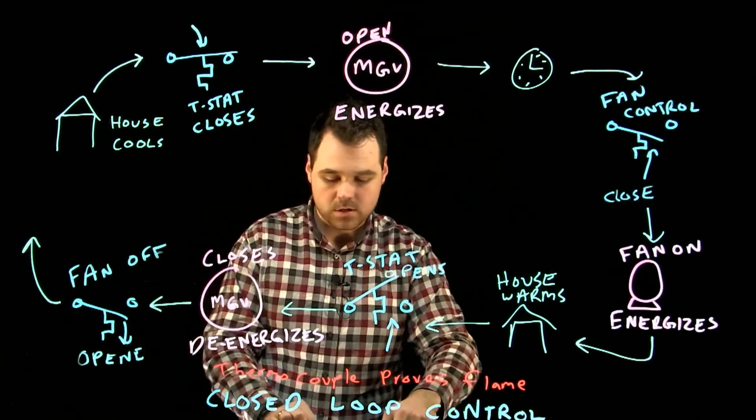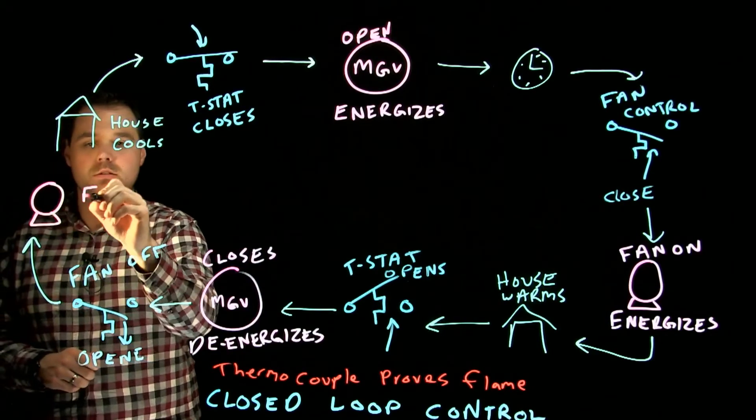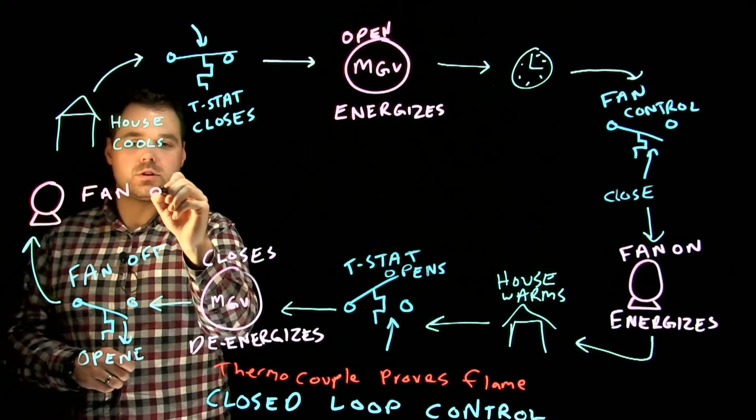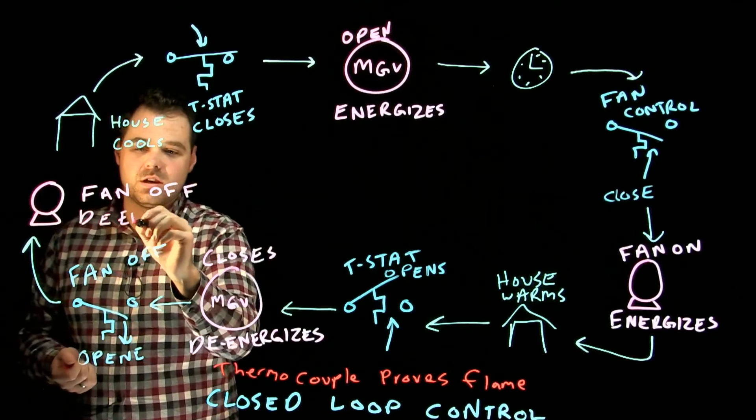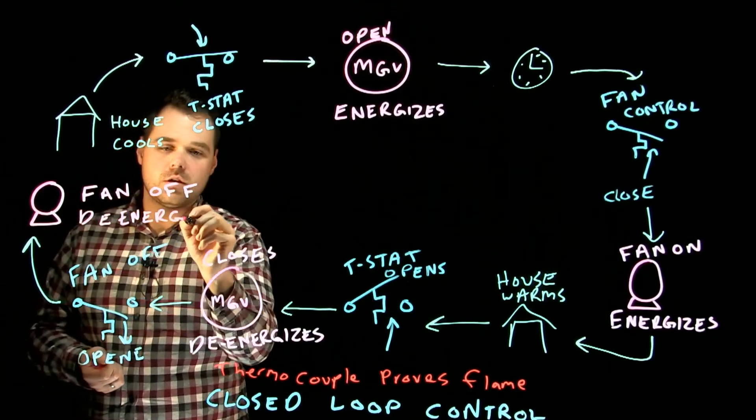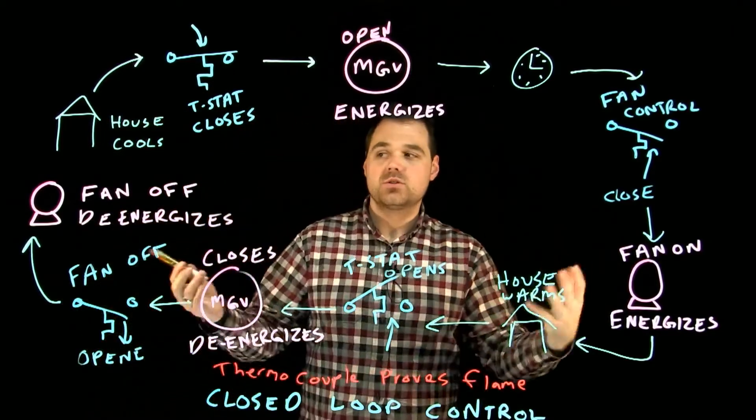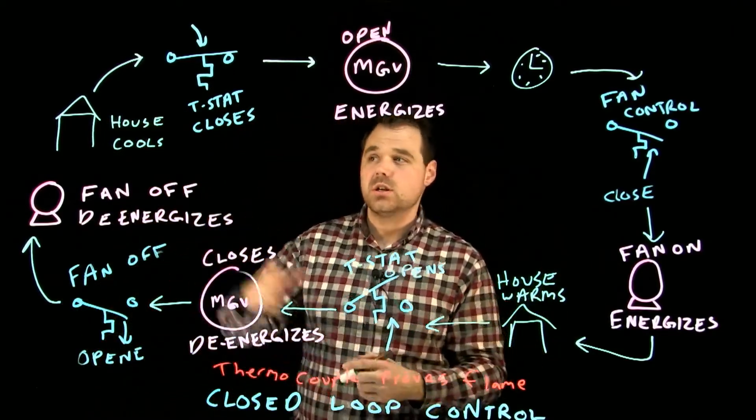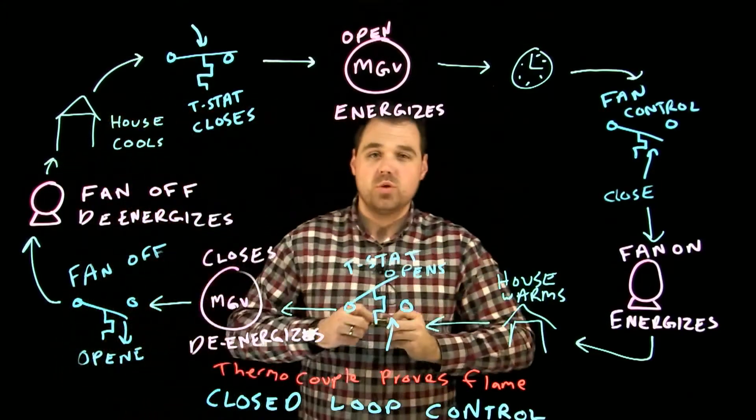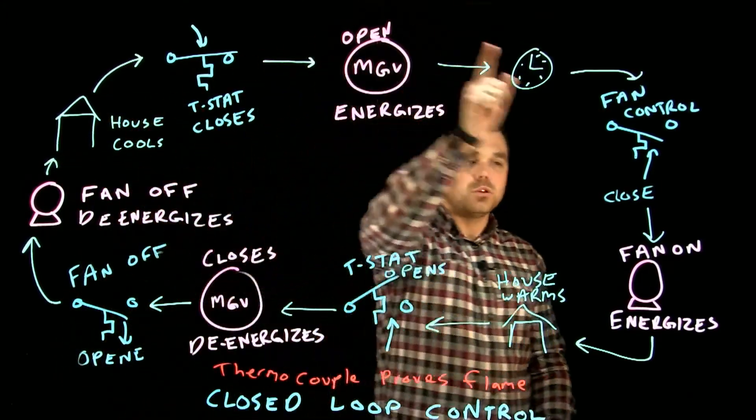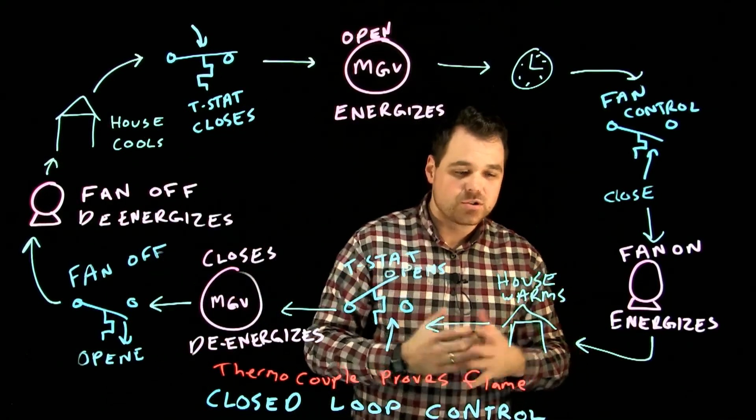Once that switch opens, we see the final step, which is the fan in the system turns off, or you could say the fan de-energizes. As soon as the fan turns off and de-energizes, again we see that house start to cool down, so we get that closed loop control.